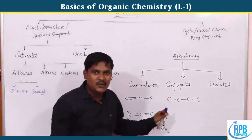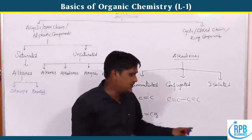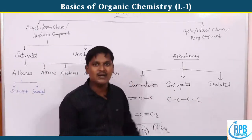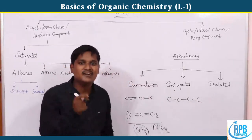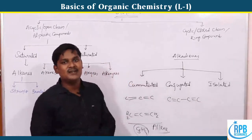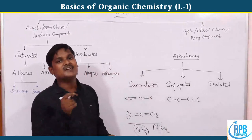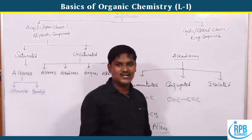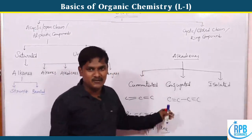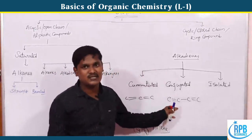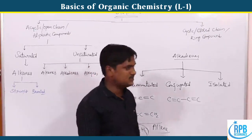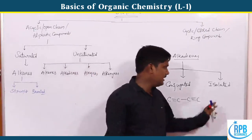The second type of alkadienes is conjugated compounds, where double bonds alternate with single bonds in the pattern: double bond, single bond, double bond. These conjugated compounds are active in UV-visible spectroscopy.